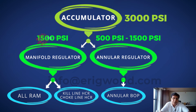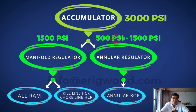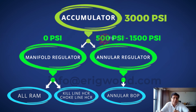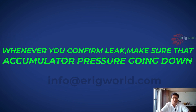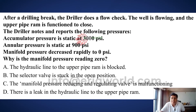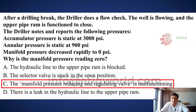In this question, the upper ram is closed but there is no change in accumulator pressure. That means the regulator has not drawn any pressure from the accumulator, so no pressure comes from the accumulator and the manifold decreases to 0. This means there is an issue with the regulator, not a leak — because if there were a leak, accumulator pressure should also go down. Whenever you confirm a leak, you make sure accumulator pressure is going down; otherwise you cannot say leak. The answer is: the manifold pressure reducing and regulating valve is malfunctioning.